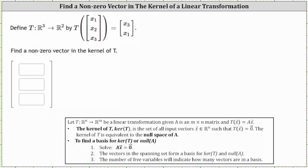In our case, we're looking for a nonzero vector X in R³ with components x₁, x₂, and x₃ where T of the vector X equals the zero vector.